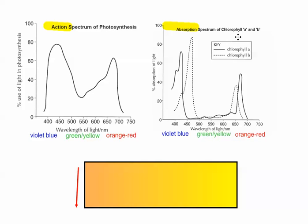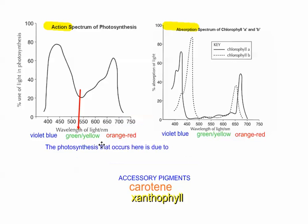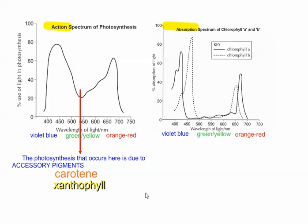And the photosynthesis that occurs here is actually due to some of these accessory pigments. And some of these other pigments are called carotene and xanthophyll. Basically, there are other pigments that are also absorbing light energy. Most of it is done by chlorophyll, and so most of that light that gets reflected back is actually green light. It gets rejected. That's why plants look green.